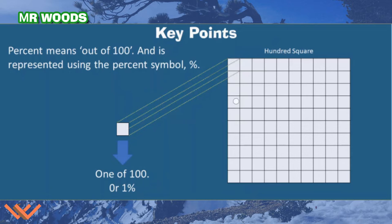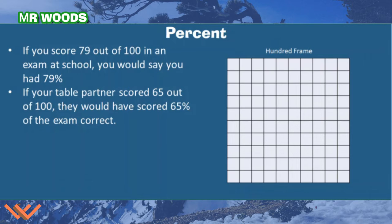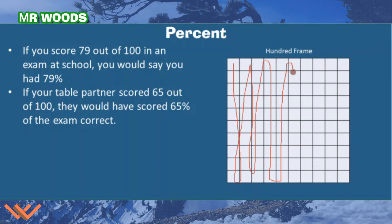If I grab this whole column, that'd be 10 of 100, or 10%. If you score 79 out of 100 on an exam at school, you would say you had 79%. How much of this 100 square would that take? Well, counting up 70 squares and then 9 more, that's 79% of the hundreds frame covered. And I can also say I missed making 100 by 21%, because 79 plus 21 is 100.